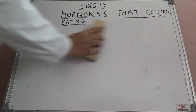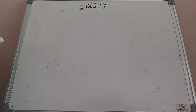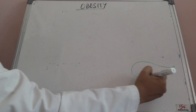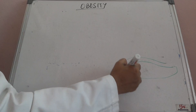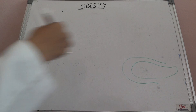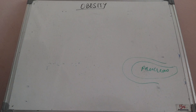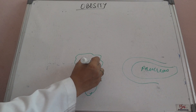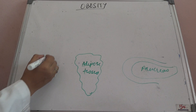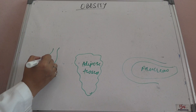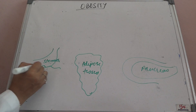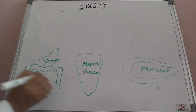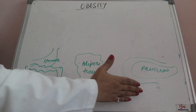Now here is an important diagram. There are three organs involved in obesity metabolism: pancreas, adipose tissue, and stomach along with the intestinal coils. These three organs — pancreas, adipose tissue, and stomach — play key roles in hormonal control of eating.